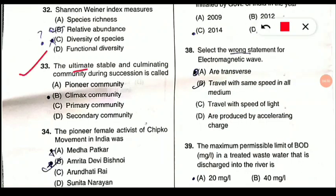Question 33: The ultimate stable and culminating community during succession is called what community? 'Culminate' means to reach a climax or point of highest development. So the answer is climax community. Note: the initial starting members of any succession are called the pioneer community, and the final stage is the climax community — stable and culminating.